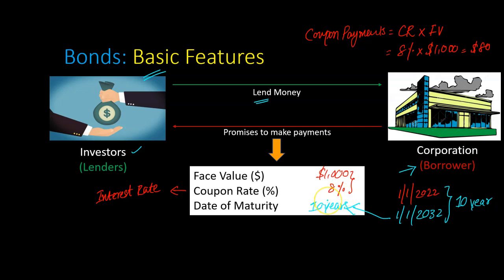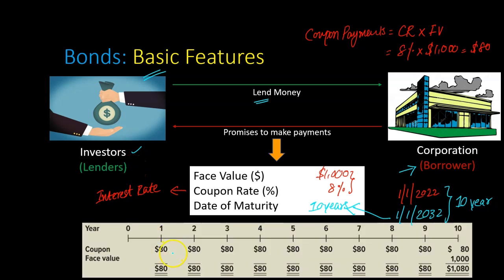If you look at the timing of the cash flows that these investors will receive, this is what it looks like. The corporation is saying that it's going to make a payment of $80 at the end of every year for the next 10 years. And here's where the face value also comes in. At the end of the 10 years — when the bond matures — the investors who are holding the bonds will also receive the face value of the bond, which is $1,000. So this, in a nutshell, is what bonds are all about.